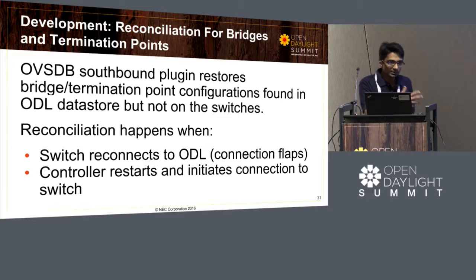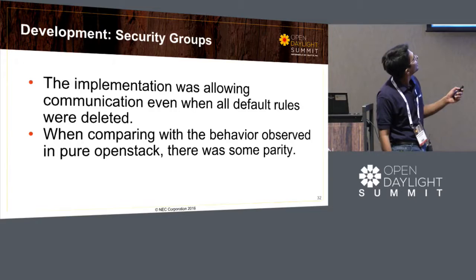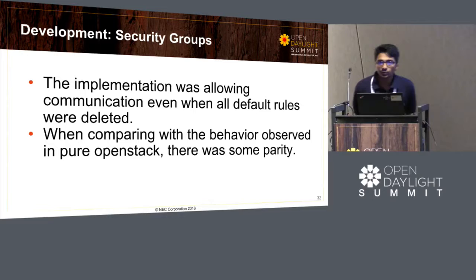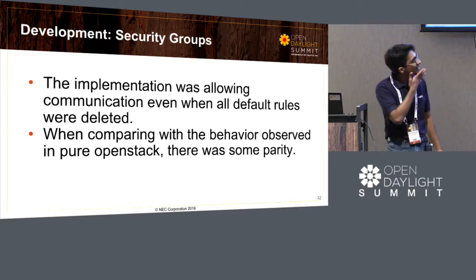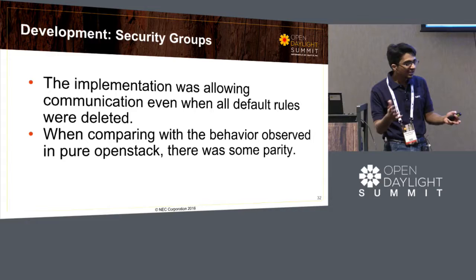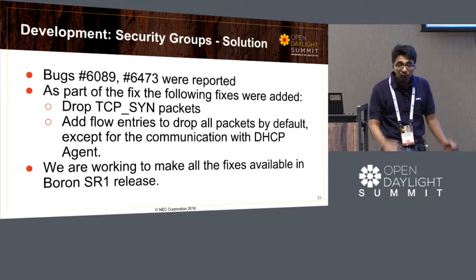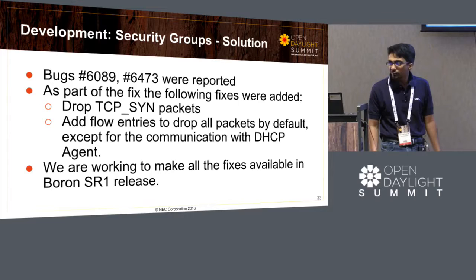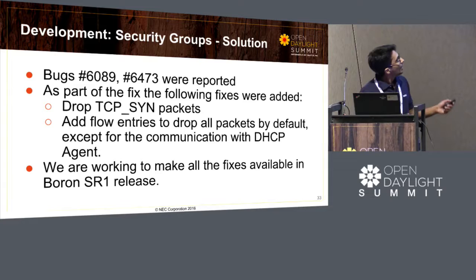Another enhancement was adding reconciliation support for OVSDB. There was no reconciliation synchronization between ODL and the OVS device whenever OVSDB went down and reconnected. We added support for reconciliation on connection reconnect. For security groups: legacy network had a security group implementation using flow entries, but we identified parity gaps compared to pure OpenStack. Legacy network was enabling all communication between VMs by default, which needed to be restricted. We created bug reports and fixed them to closely match OpenStack security group behavior. This patch is currently in review and targeted for Boron SR1.